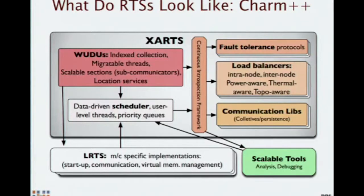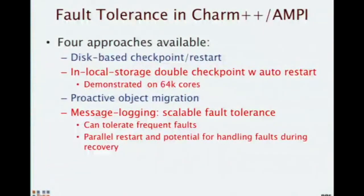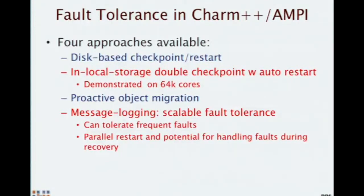We have an excellent collection of performance analysis and debugging tools, enriched by the richness of the runtime model itself. I want to single out fault tolerance, since there's no separate talk on it. Fault tolerance is increasingly important as we go towards exascale. CHAM++ has supported in-local storage double checkpoint with automatic restart in a highly scalable way — demonstrated on 64K nodes, with no reason it won't work on millions. Disk-based automatic checkpoint restart comes with the CHAM++ distribution and requires no extra code.